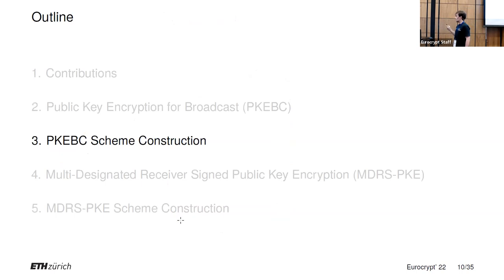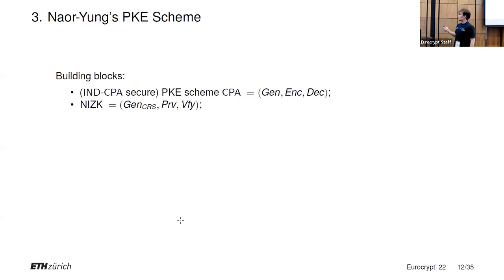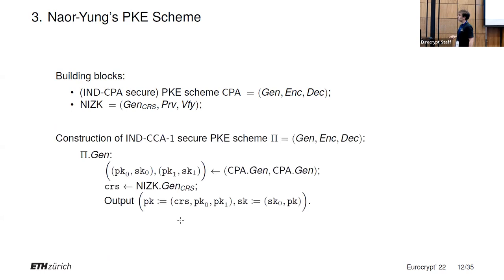Let's look at how one can construct a PKE-BC scheme. We'll first recall Nouryung's IND-CCA1 PKE scheme, then show how to turn it into a PKE-BC scheme, and finally make it anonymous. As building blocks for Nouryung's PKE scheme, we'll have an IND-CPA secure PKE scheme and a non-interactive zero-knowledge proof. The key pair generation algorithm will generate two key pairs for the underlying CPA scheme and a CRS for the NIZK. The public key will consist of the public keys for the underlying CPA scheme and the CRS, and the secret key will be one of the CPA-generated secret keys.